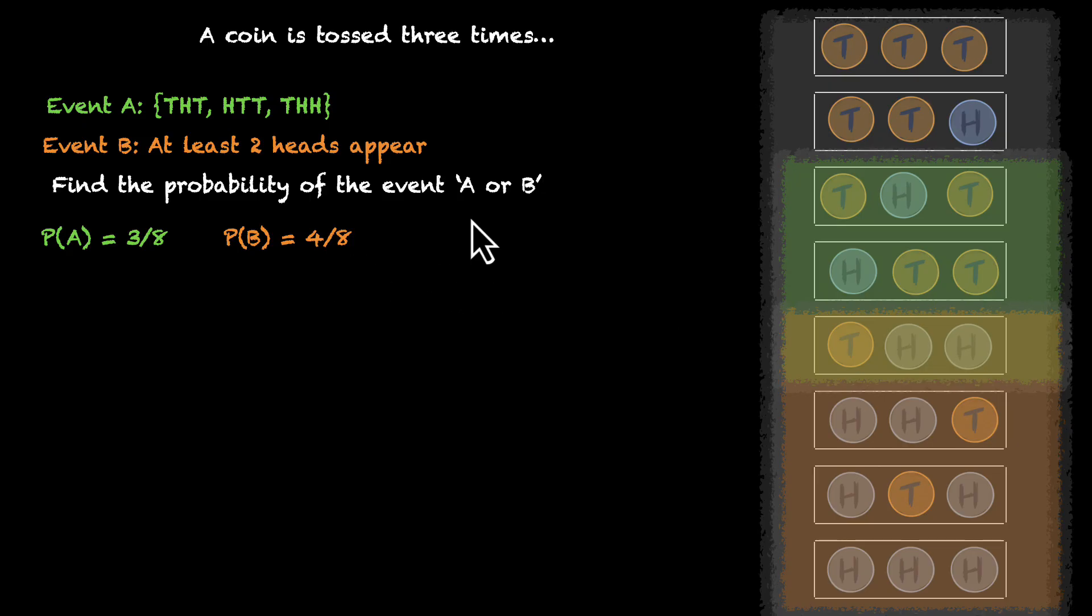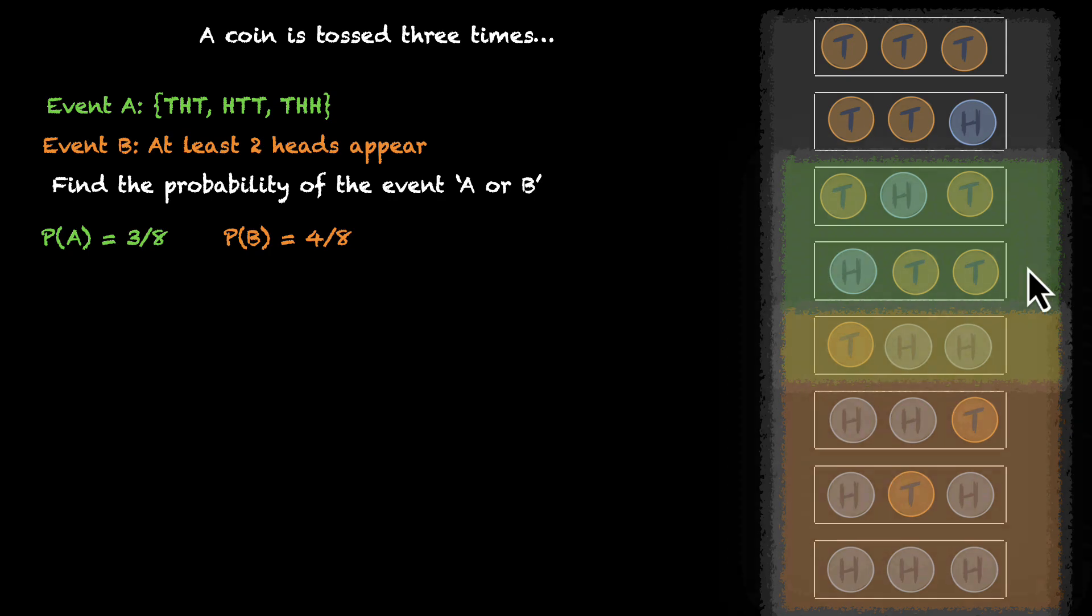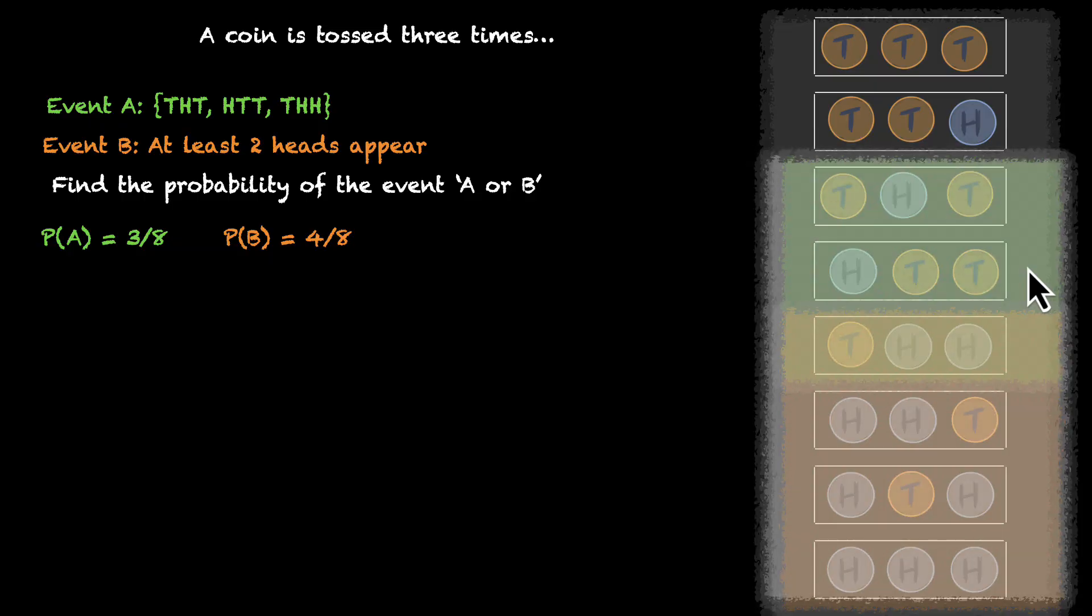But we need the probability of event A or B. So we can pick events from A or events from B or both. So A or B both work for us. This is going to be the event A or B. Let's quickly count the number of sample points. One, two, three, four, five, and six. So this event will have the probability six by eight.